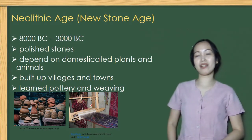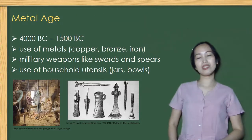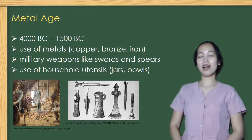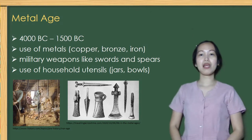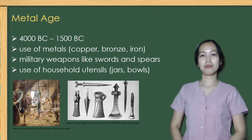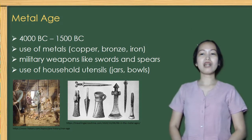People kept on discovering things for their own convenience, so the next period happened — the Metal Age. The use of metals such as bronze, copper, and iron produced a new historical development from the cradle civilizations of Egypt, Mesopotamia, Persia, India, and China, which later spread throughout Asia. Agricultural tools were developed with bronze, such as plows; military weapons like swords, spears, and shields; as well as household utensils like jars and cups.